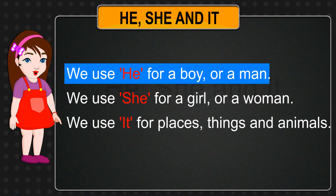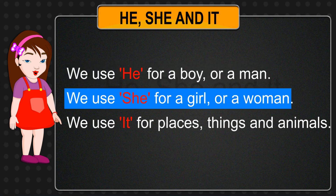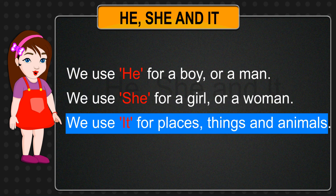We use He for a boy or a man. We use She for a girl or a woman. We use It for places, things and animals.